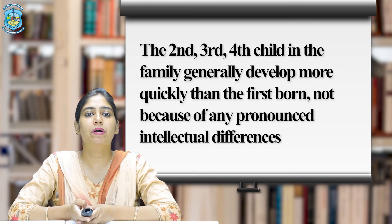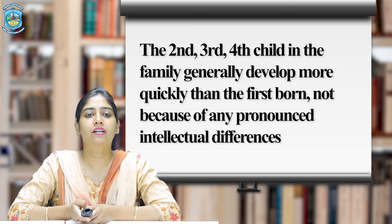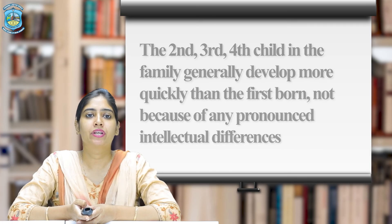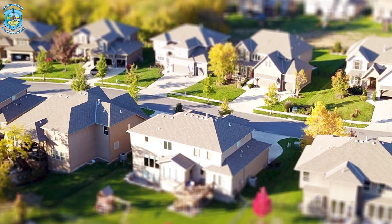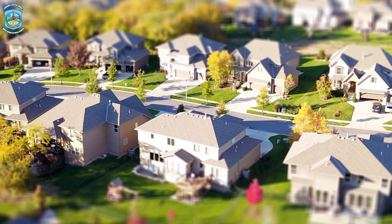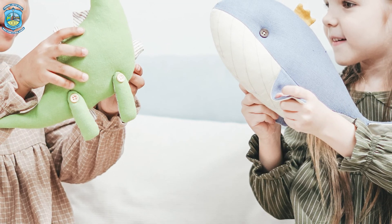Position in the family is one of the personal factors. The position of the child within the family influences development more through environmental than through natural factors. The second, third and fourth child in the family generally develops more quickly than the firstborn — not because of intellectual differences but because younger children learn from imitating their older brothers and sisters. On the other hand, the youngest child, especially if distinctly younger than the others, is apt to be slower in development because they are more pampered and overprotected.